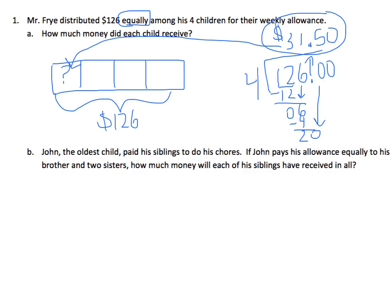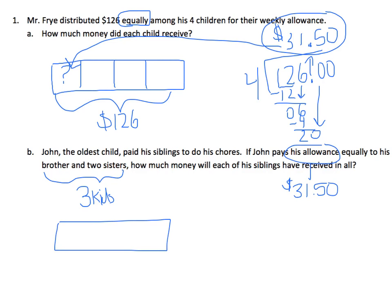Part B tells us that John, the oldest child, paid his siblings to do his chores. If John pays his allowance equally to his brother and two sisters, how much money will each of his siblings have received in all? I know that John's allowance is $31.50, because I figured that out in Part A. He's sharing it equally among his brother and two sisters, which tells me that three kids are getting that money. On my tape diagram, the total amount being split is $31.50 between three children.